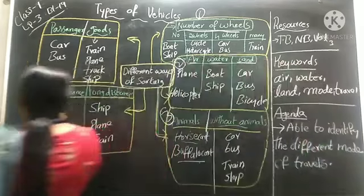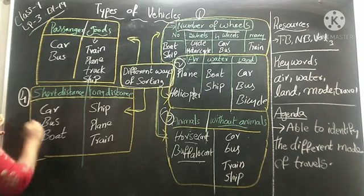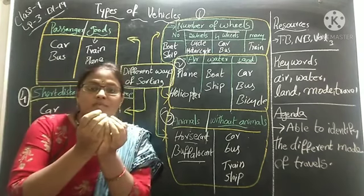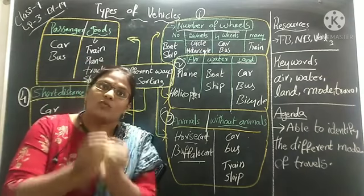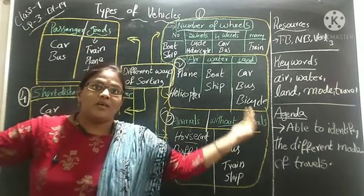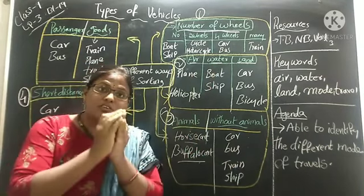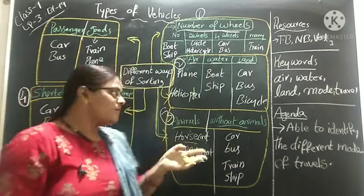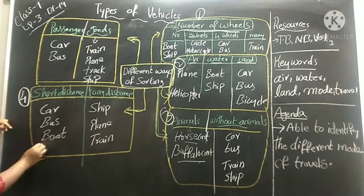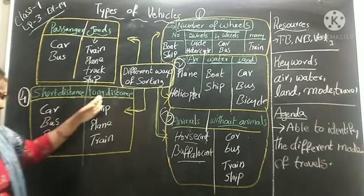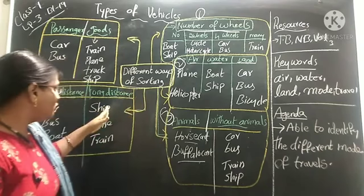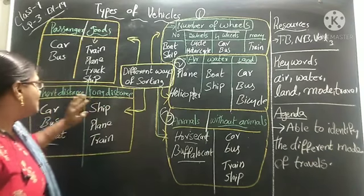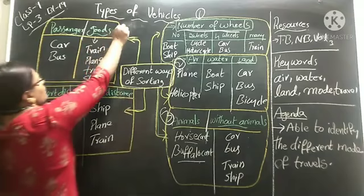Coming to the fourth point: we can move from one place to another for a small distance or a long distance. For a small distance, we go by cycle, bus, or car. For a long distance, we go by ship, plane, and train. This is the fourth point.